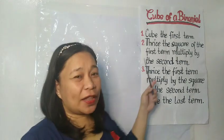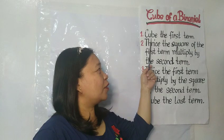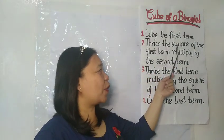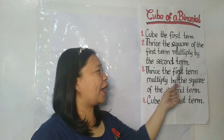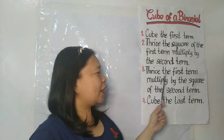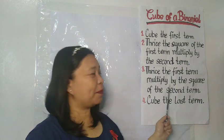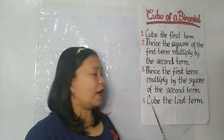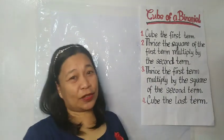Take a look at this. We have four parts: 1. Cube the first term. 2. Thrice the square of the first term multiplied by the second term. 3. Thrice the first term multiplied by the square of the second term. And number 4, cube the last term.